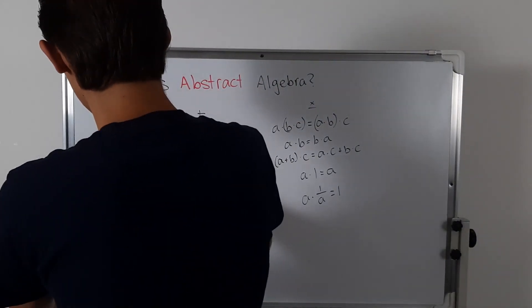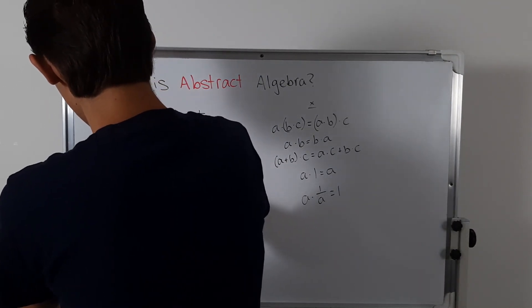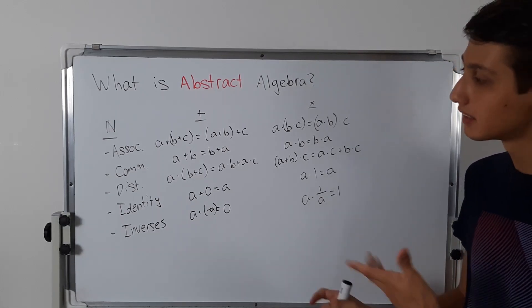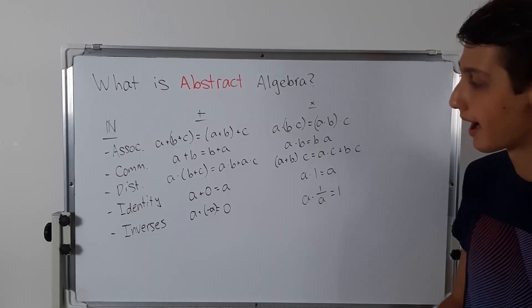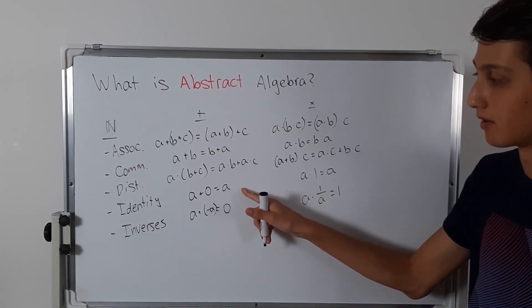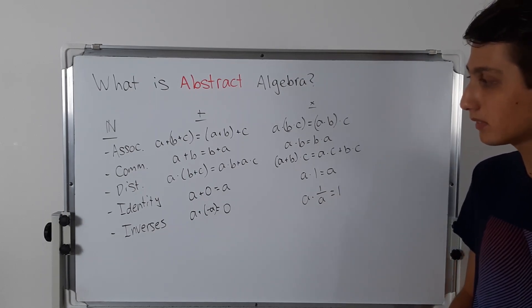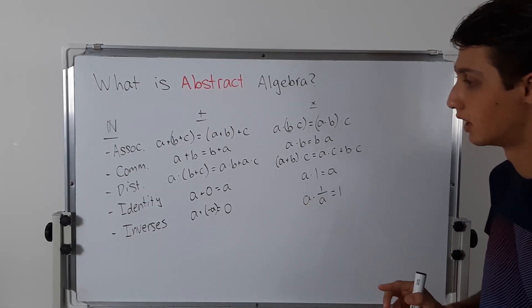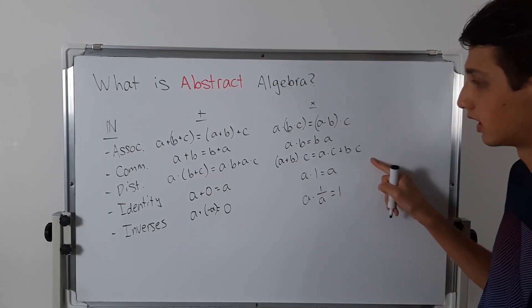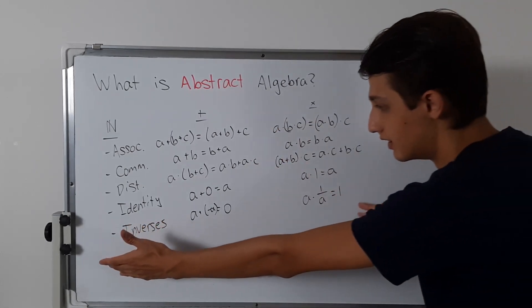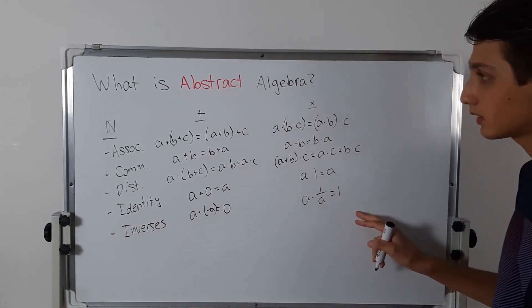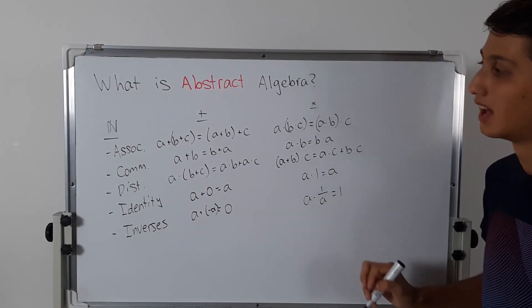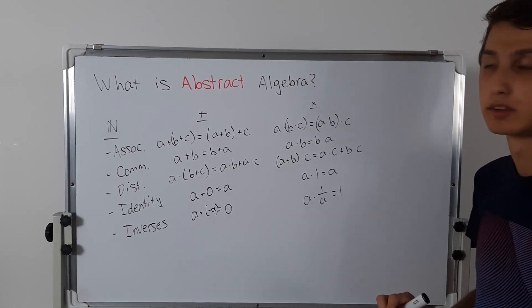Let's consider something even worse — the natural numbers. For the sake of this video, let's say natural numbers include zero. Then you have the additive identity, but you don't have the additive inverses. You don't have multiplicative inverses either. If you exclude zero from the set, then you don't even have the additive identity, which is even worse. So we're starting to form some of these ideas.